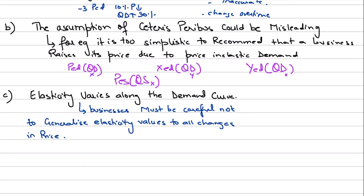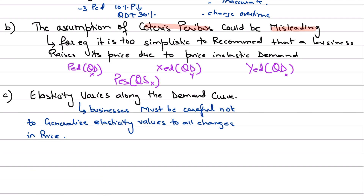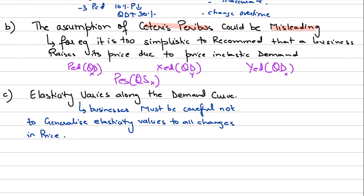The second criticism you can make is that the assumption of ceteris paribus is actually misleading. When you use the word ceteris paribus, it means that we're only talking about one factor under consideration that could have an impact on either quantity demanded or quantity supplied, and we're keeping all the other factors constant. For example, if you're talking about price elasticity of demand, you're calculating the impact of a change in price of good X on the quantity demanded of good X, keeping other factors constant.